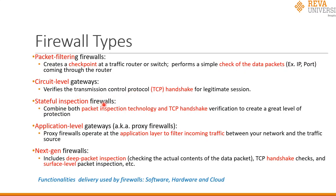Stateful inspection firewalls combine both packet inspection technology and TCP handshake verification to create a greater level of protection. Then we have application level gateways, also known as proxy firewalls, which operate at the application layer to filter incoming traffic between the network and the traffic source.